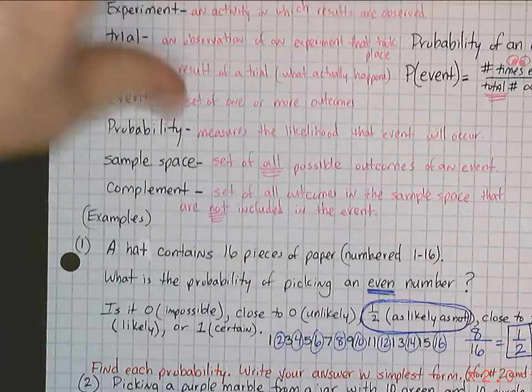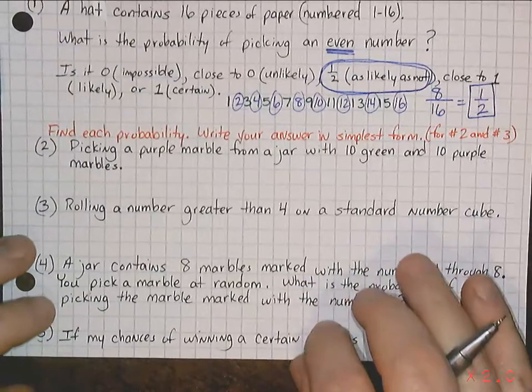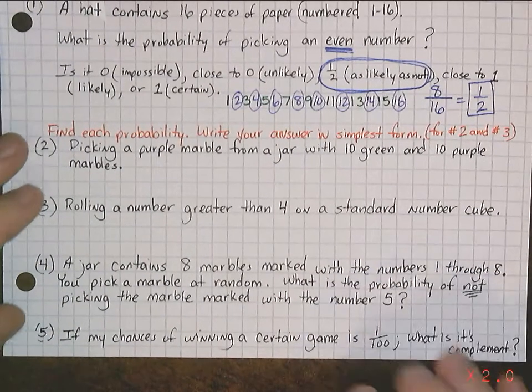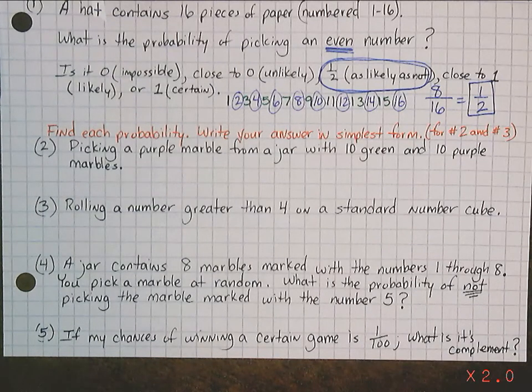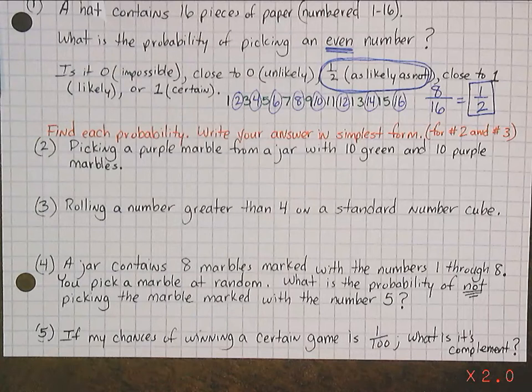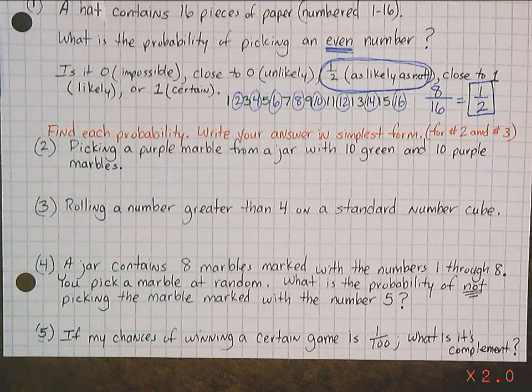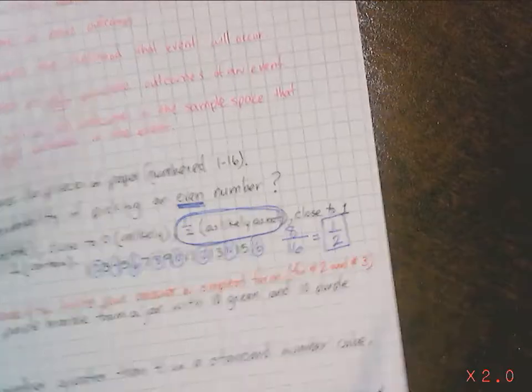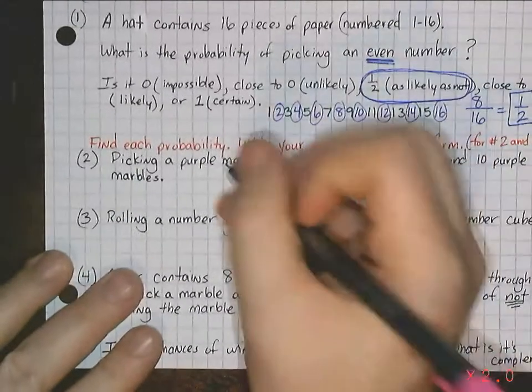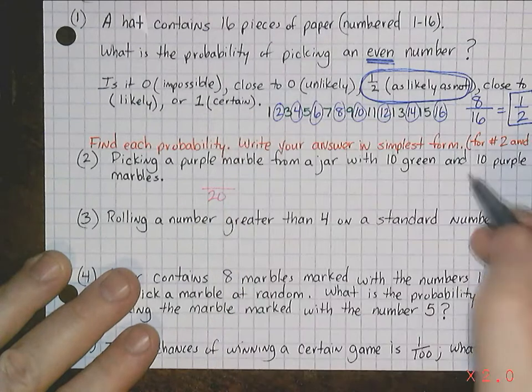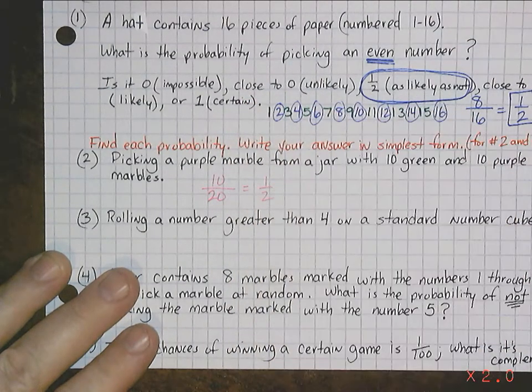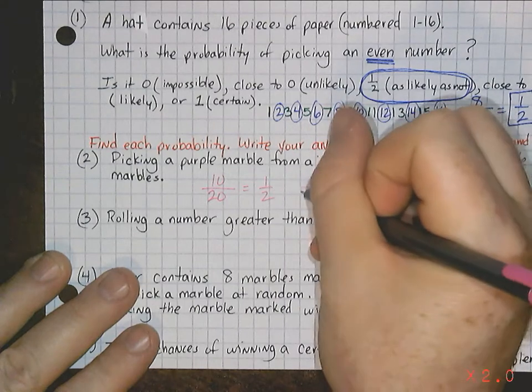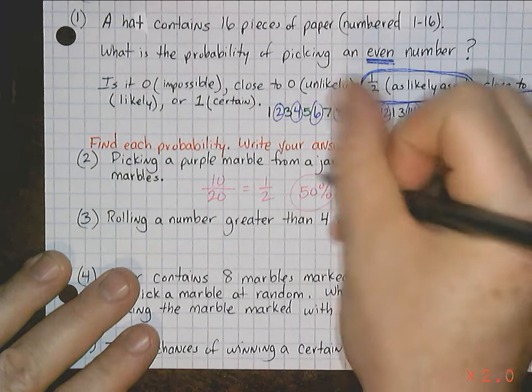Number 2. For number 2 and number 3, it says, find each probability. Write your answers in simplest form. So, number 2. Picking a purple marble from a jar with 10 green and 10 purple marbles. So, what's the probability of you picking a purple? Well, you've got 10. So, there's 10 times that actually could occur. But, what's the total outcomes? Well, you've got 20 marbles. That's your total. So, 20 is going to be your denominator. But, 10 is what you're looking for. Lowest terms is 1 half. Basically, it's 50%. You've got a 50% chance of getting a purple. Pretty simple, right?